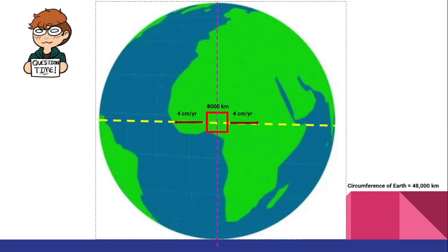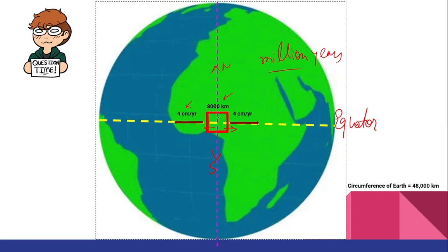As a fun exercise, assume a square plate at the center of the Earth on the equator, getting rifted as the first stage of the Wilson Cycle along a north-south trend. The plate's side is 8,000 kilometers, and after rifting, both blocks move apart at a speed of 4 centimeters per year. After how many million years will these two blocks meet again after completing the whole journey? A key assumption: the circumference of the Earth is 48,000 kilometers. Answer in the comments.